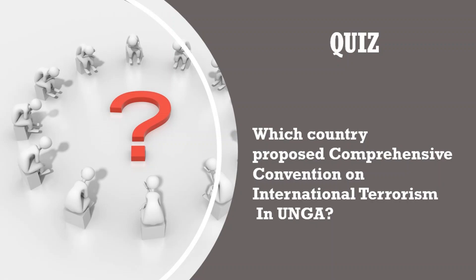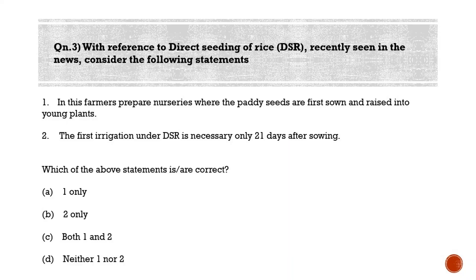We now move to the last question for the day. With reference to Direct Seeding of Rice (DSR), recently seen in the news, consider the following statements. Statement one: in this method, farmers prepare nurseries where the paddy seeds are first sown and raised into young plants. Statement two: the first irrigation under DSR is necessary only 21 days after sowing. The correct answer is option B: two only.